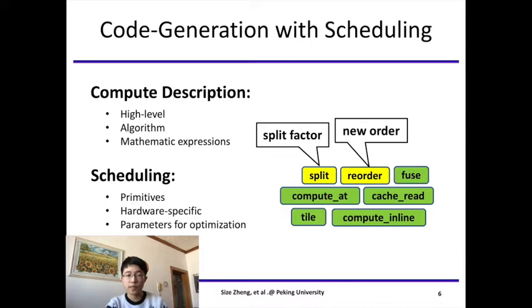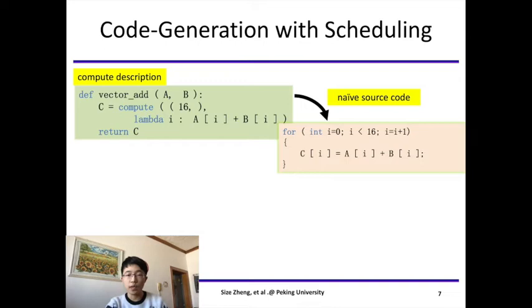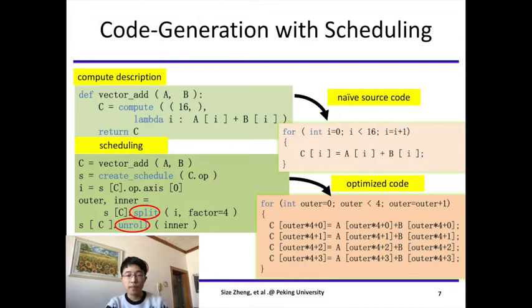Here is an example that illustrates the idea of compute and schedule. From the compute description, we can get naive source code which is only a single for loop. And we can use scheduling to optimize the computation by adding some primitives. In this example, we use split for loop partition and unroll for loop unrolling. This is the resulting code, which is potentially more efficient than the naive one. With compute and schedule, we can generate source code from high-level algorithm and optimization descriptions, which can largely relieve the problems of hand-optimized libraries.